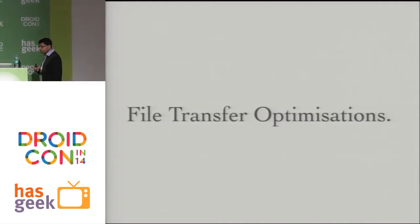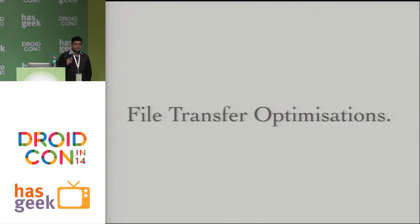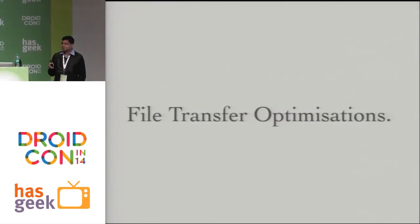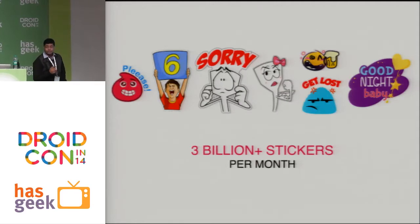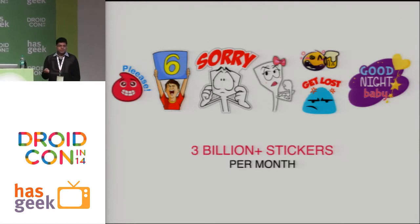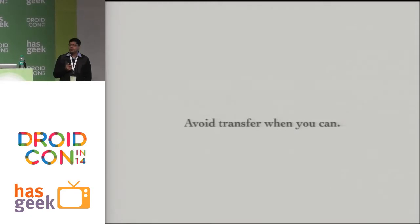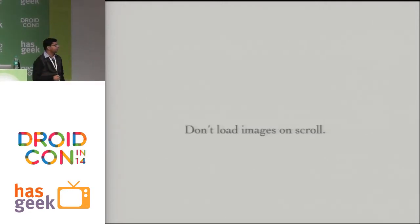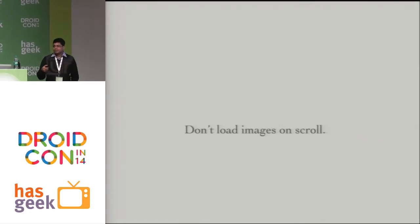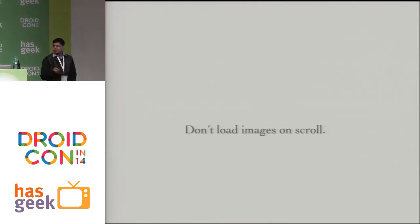Moving to file transfer optimizations. A lot of apps knowingly and unknowingly do a lot of file transfers. Just to give context, more than 3 billion stickers are exchanged every month on the Hike network — these stickers are nothing but image files for us internally. The first rule is to avoid file transfers when you can. The easiest thing: don't load images on scroll. If the user is just scrolling, stop loading images at that time — they may not be interested in all those views. It's a simple thing but a lot of times we miss it.